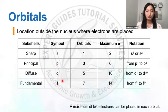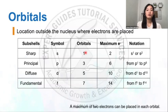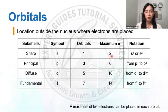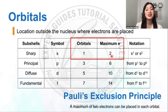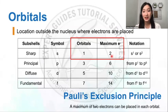For the S sub-shell, one orbital can be found. For every orbital, there is a maximum of two electrons only — an orbital can hold up to two electrons. This is what Pauli's exclusion principle tells us: a maximum of two electrons per orbital. So the notation for our S sub-level is S1 or S2, depending on the number of electrons.